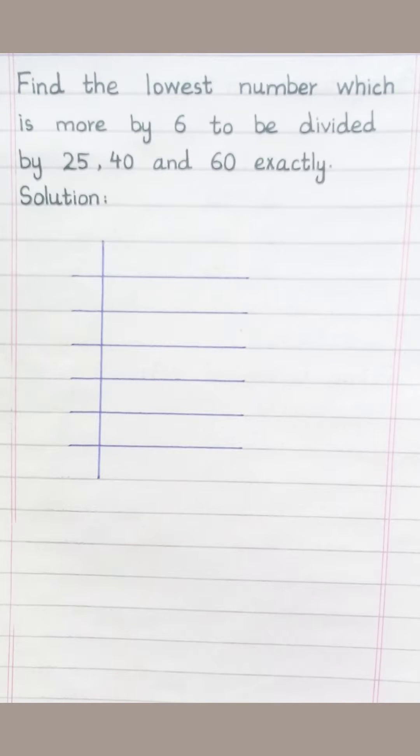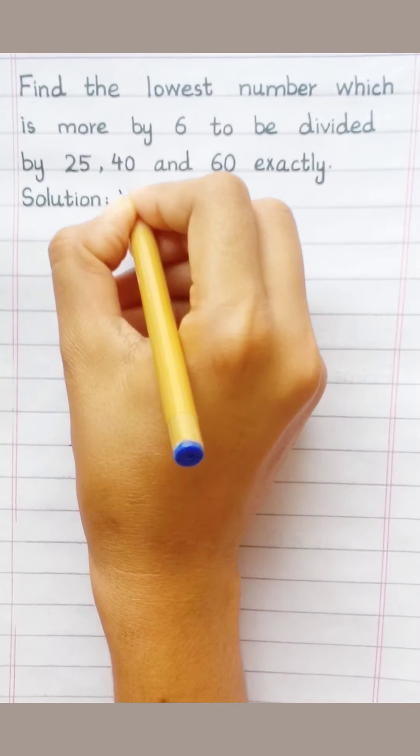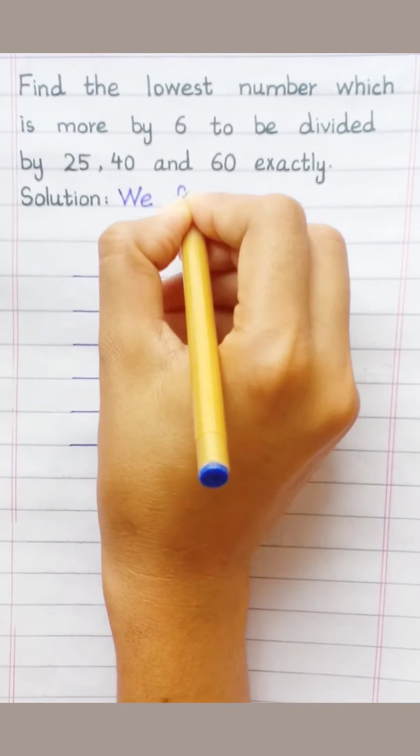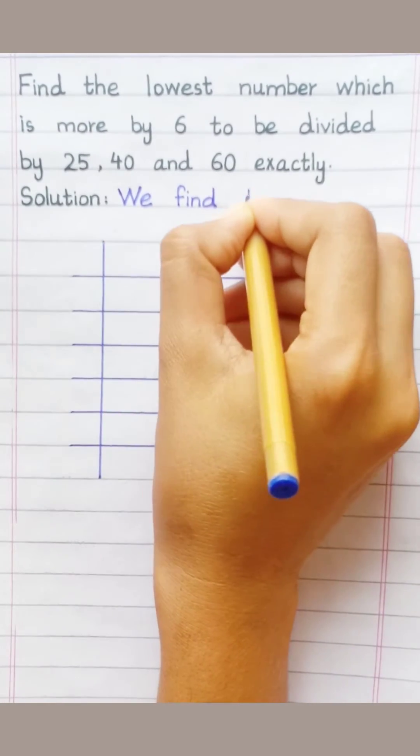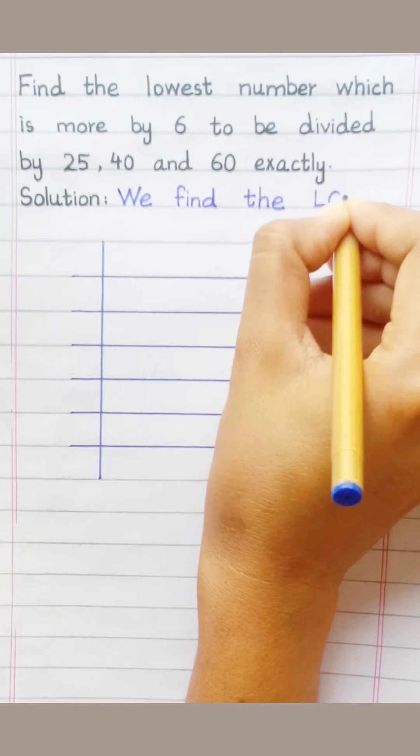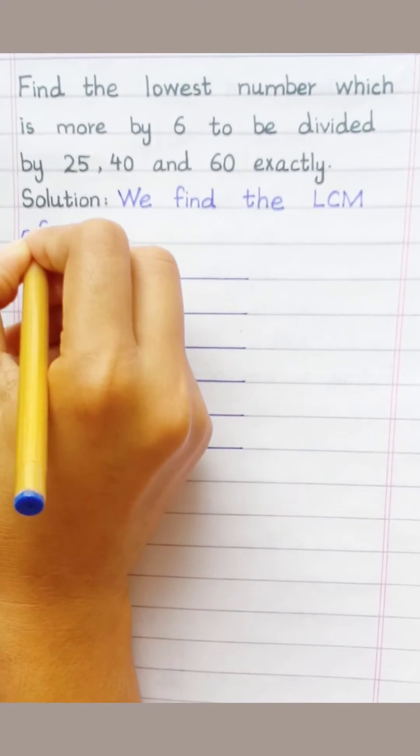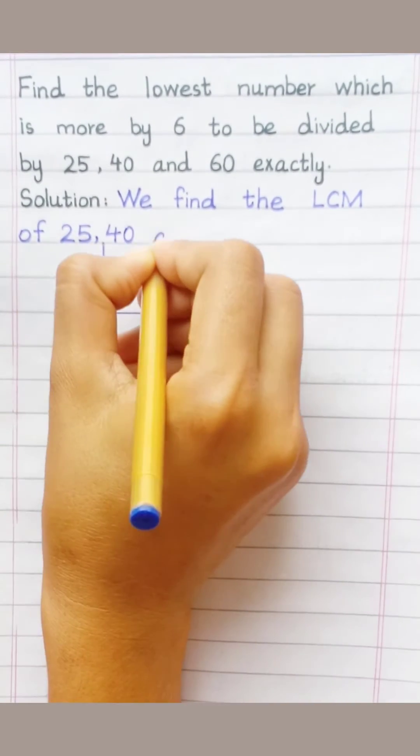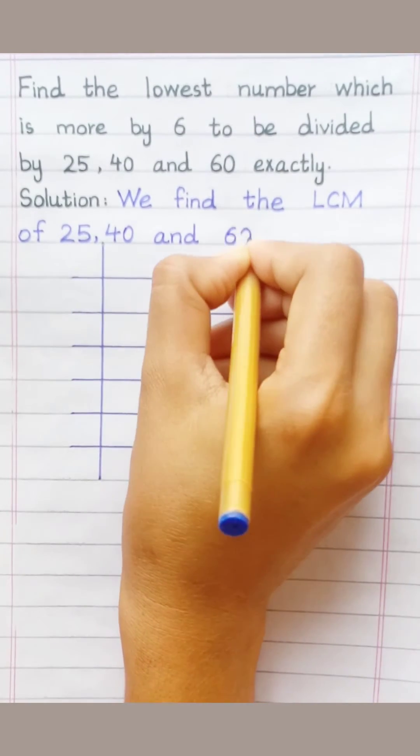Find the lowest number which is more by 6 to be divided by 25, 40, and 60 exactly. Solution: We find the LCM of 25, 40, and 60.